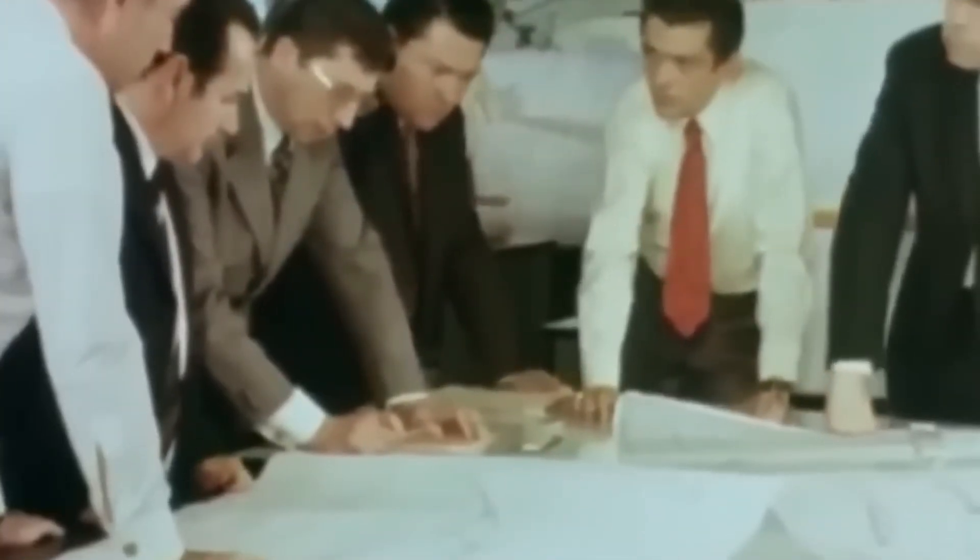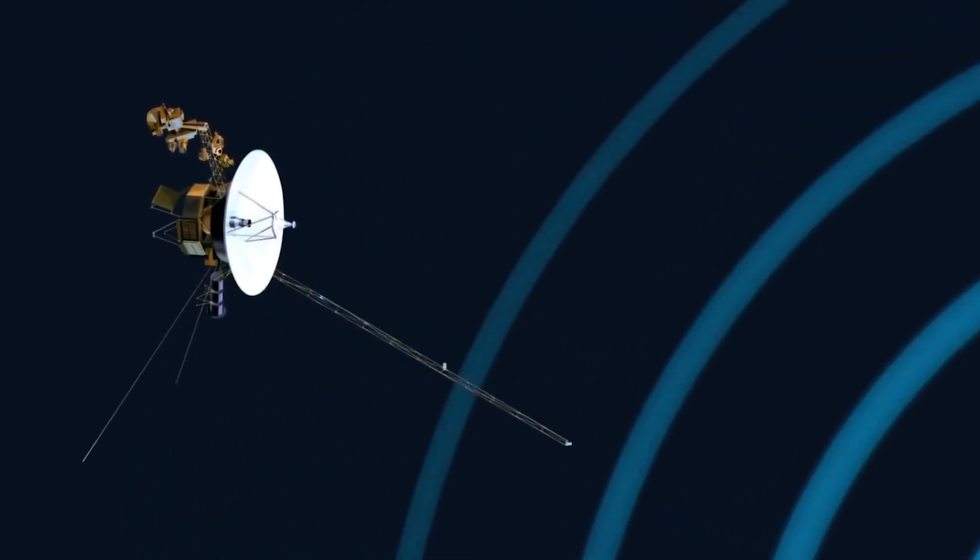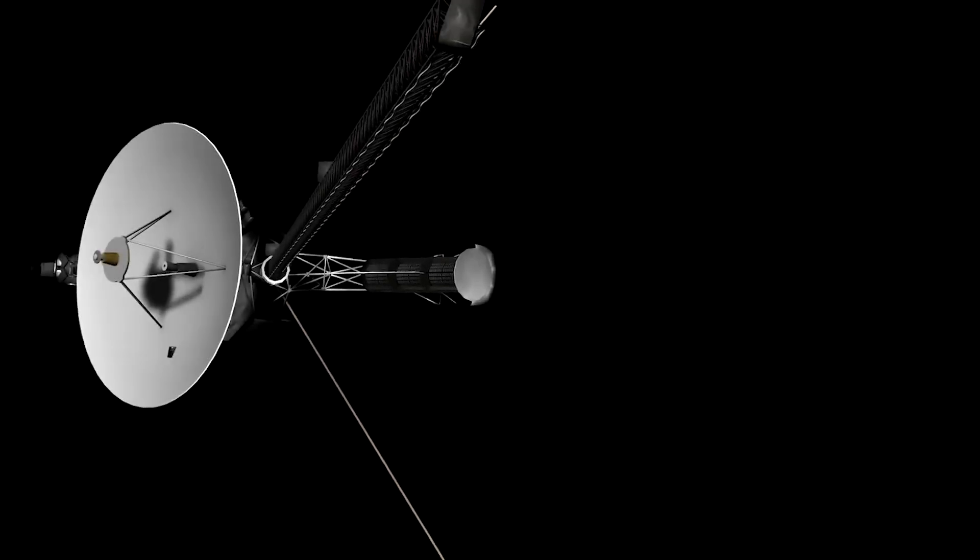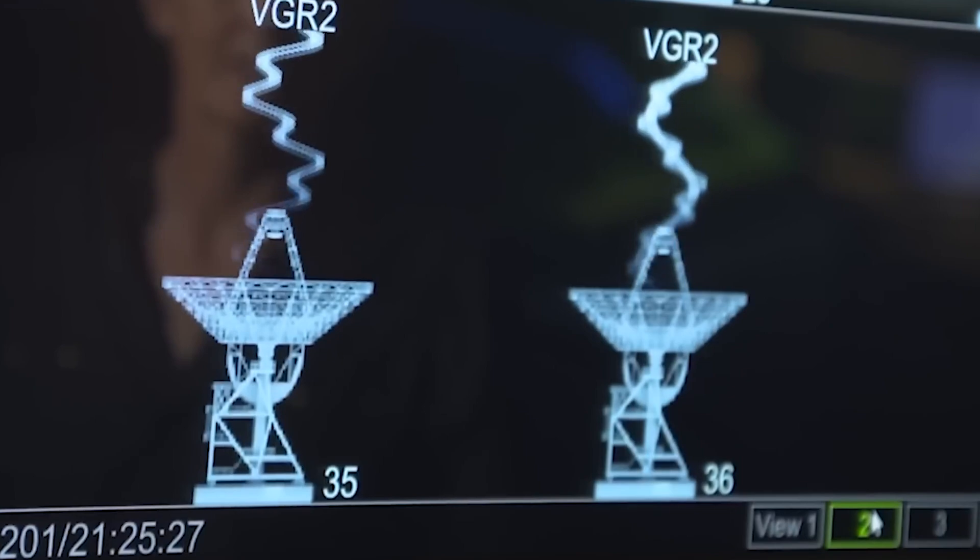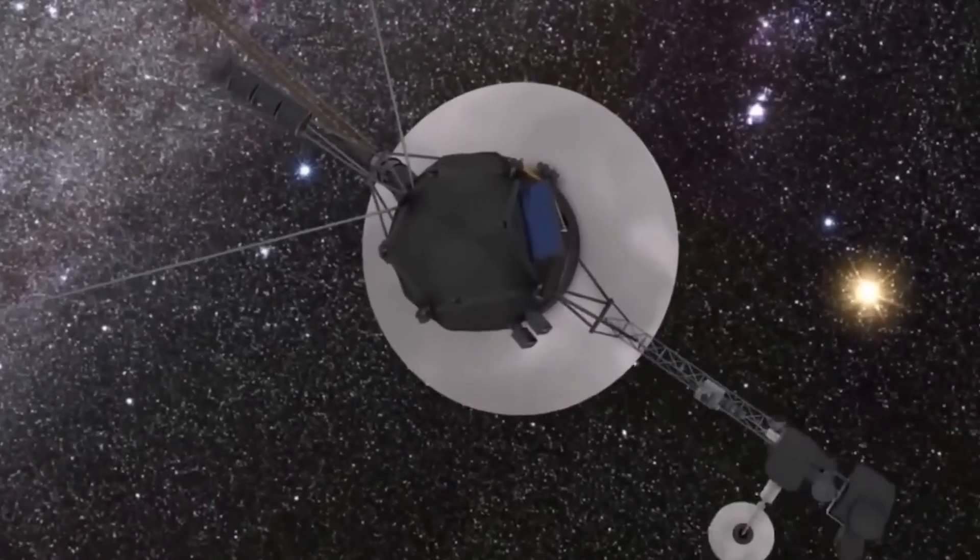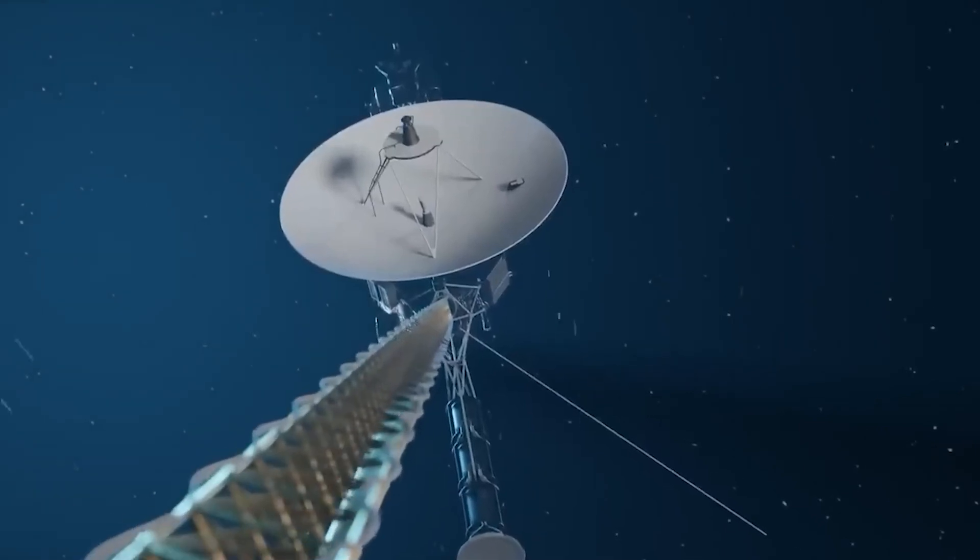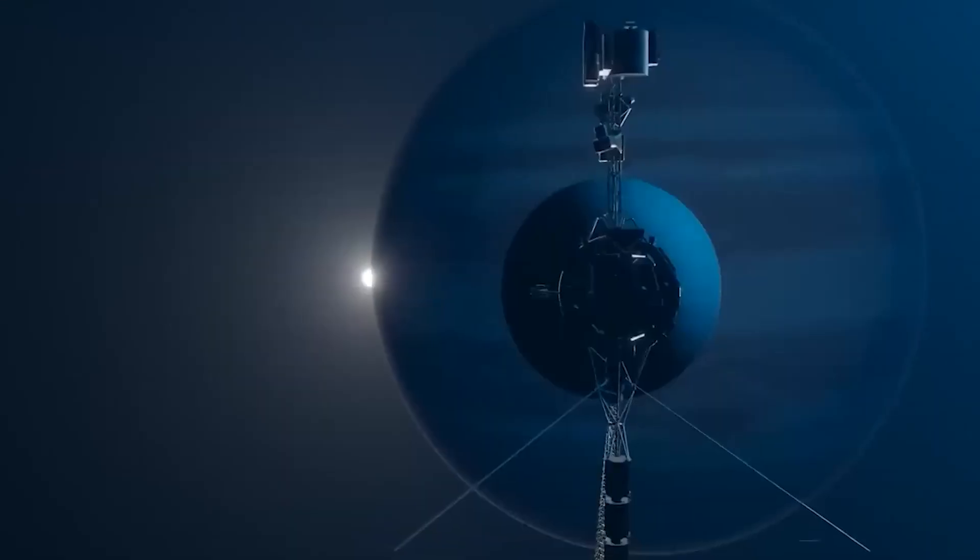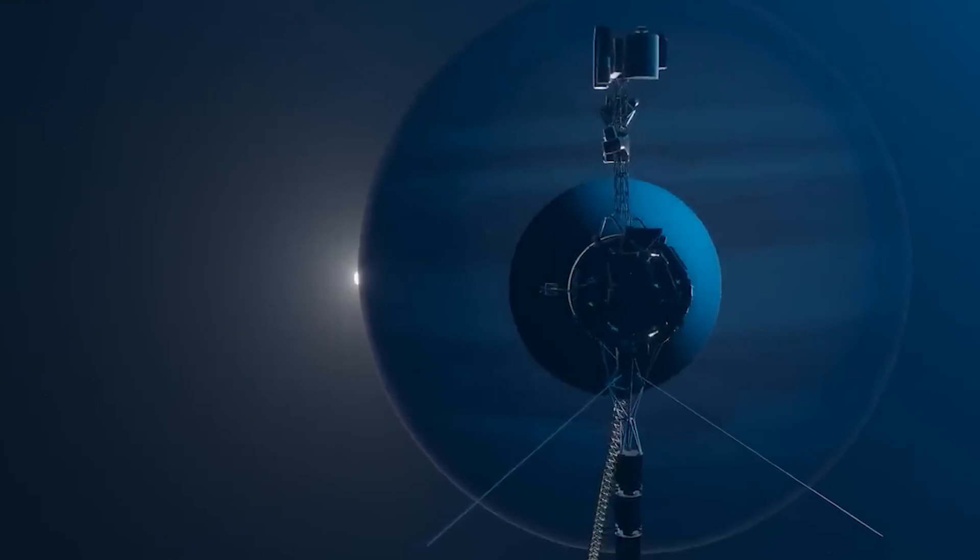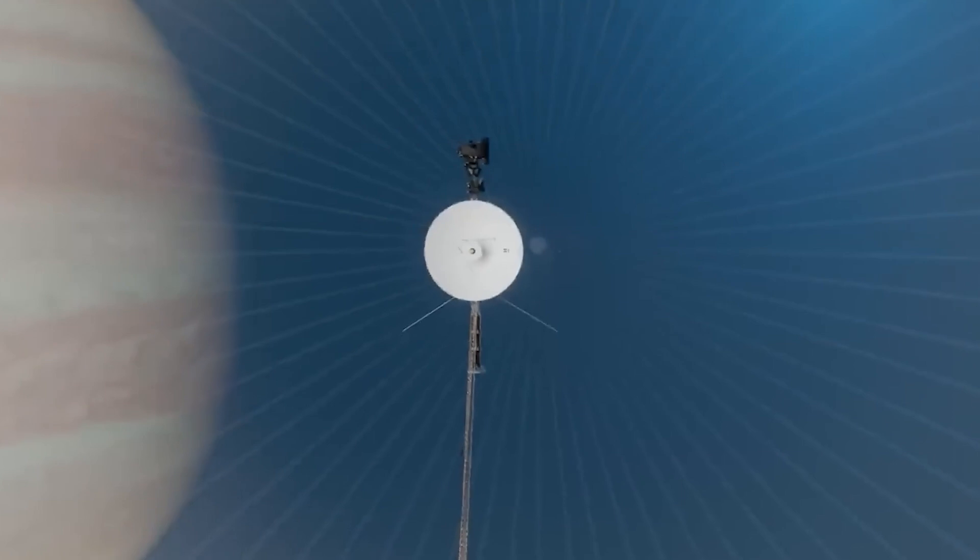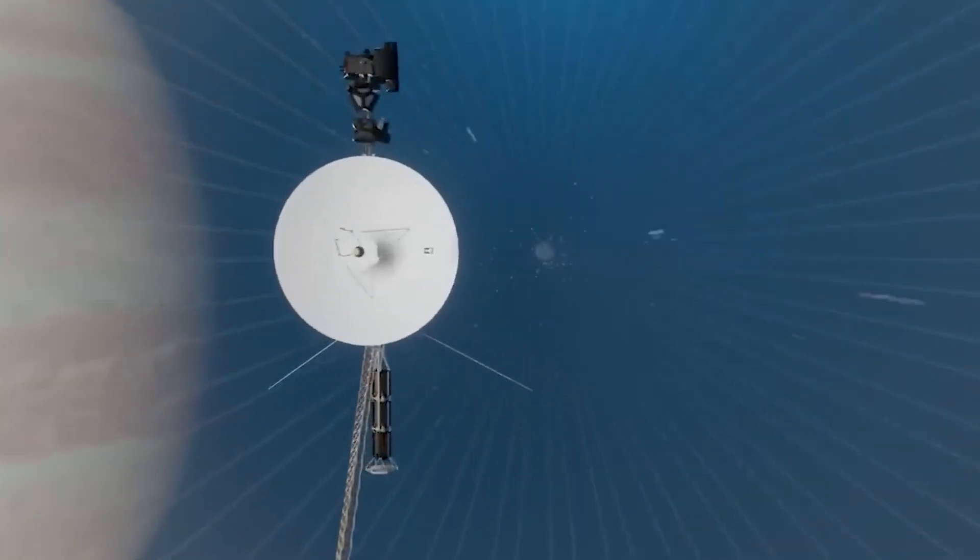However, the rest of the spacecraft remained operational and continued to collect data. Engineers acted quickly and sent a command to Voyager 1 instructing the AACS system to shift to the correct computer to transmit the telemetry data. Although the solution was low risk, it required a great deal of patience because of the significant delay caused by the distance between Earth and Voyager 1. Radio signals take nearly 22 hours to travel back and forth, so the troubleshooting process required careful coordination.